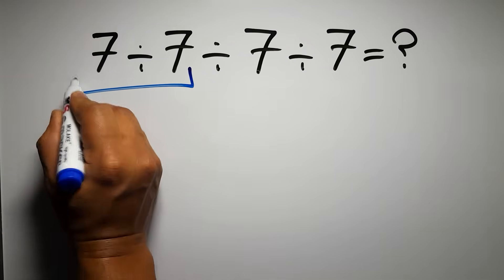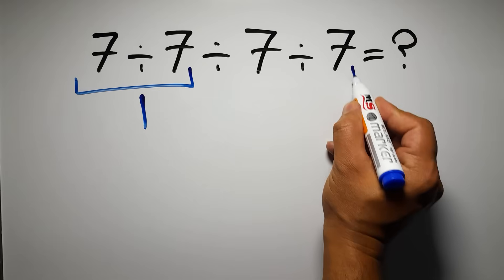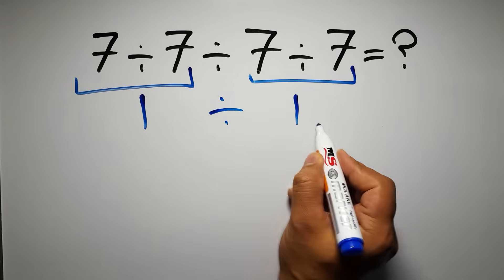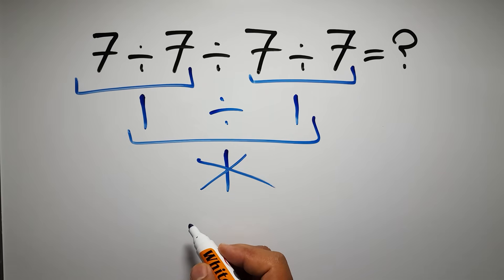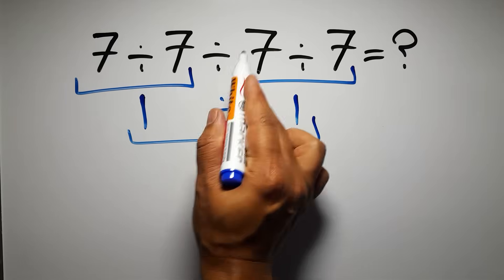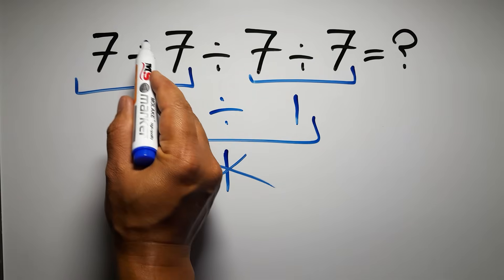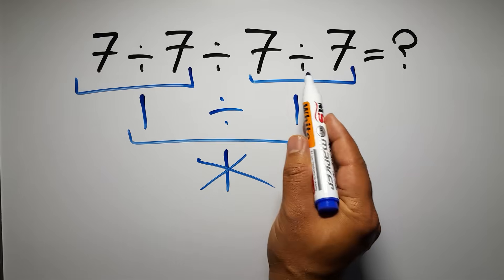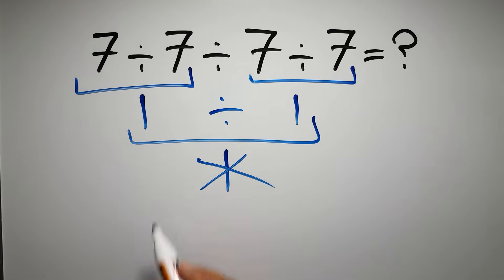7 divided by 7 gives us 1, and again here we have 7 divided by 7, so 1 divided by 1 gives us 1. But this answer is not correct, because according to the order of operations, when we have more than one division in an expression, we have to work from left to right. So here, first we have to do this division, then this division, and finally this division. If we do this division before this division, it is wrong.